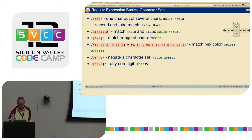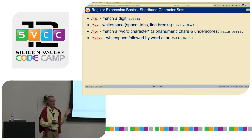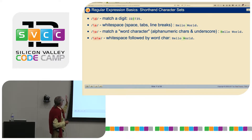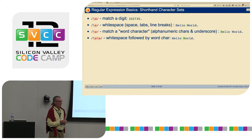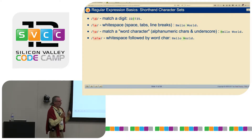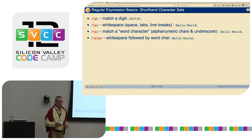There are also shorthands for character sets using backslash notation. Backslash-D is a digit — equivalent to [0-9]. Backslash-S lowercase is whitespace, which includes space, tabs, and line breaks. Backslash-W matches a word character, which is defined as alphanumeric characters and underscore. So if you have \s\w, that means we're looking for a space followed by a character.